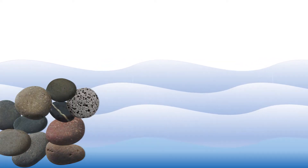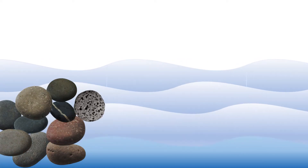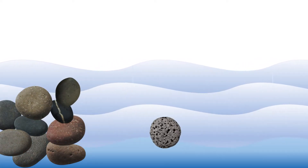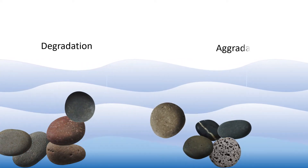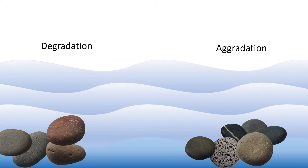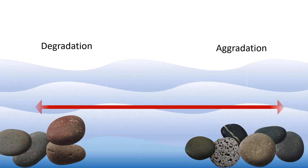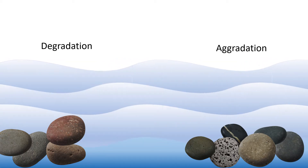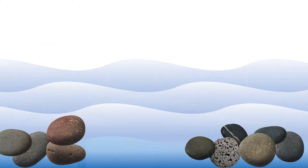What is degradation and aggradation? Degradation is the eroding of land surface, and aggradation is the building up of land surface.